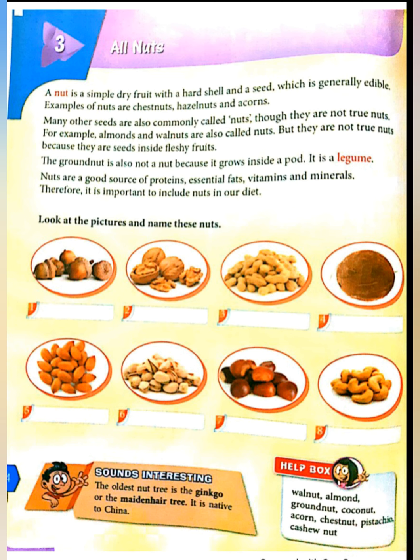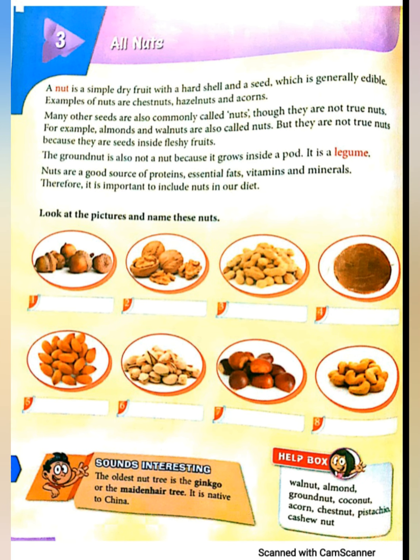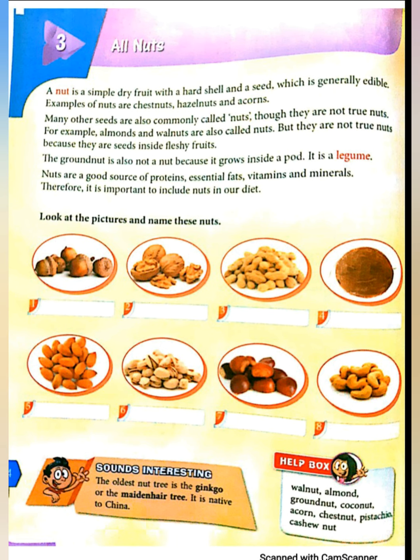Lesson 3: All Nuts. A nut is a simple dry fruit with a hard shell and a seed which is generally edible. Examples of nuts are chestnuts, hazelnuts, and acorns. The groundnut is also not a nut because it grows inside a pod. Nuts are a good source of proteins, essential fats, vitamins and minerals.